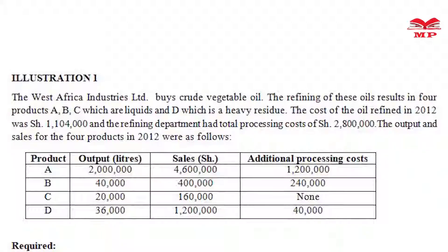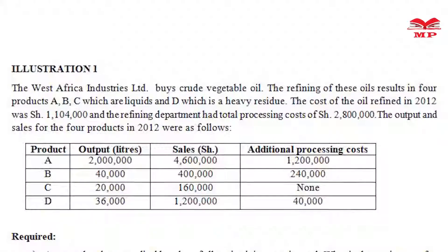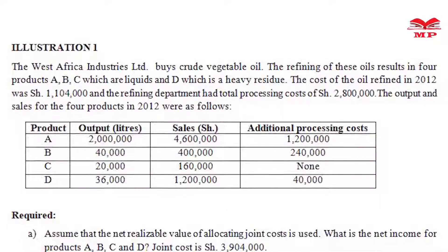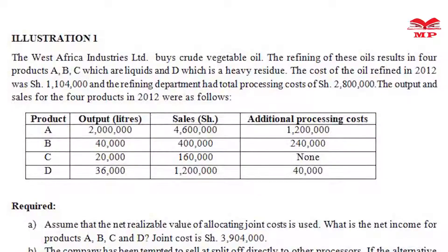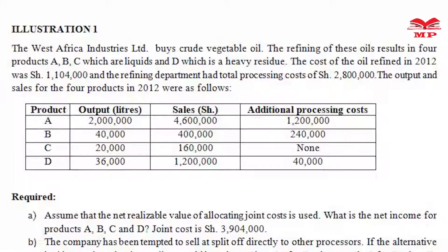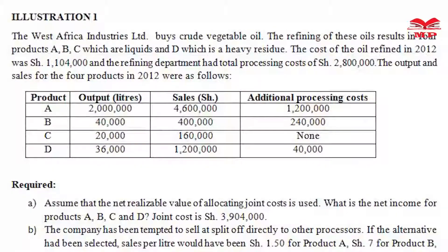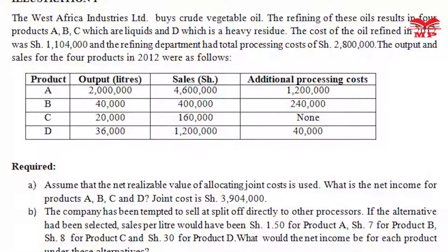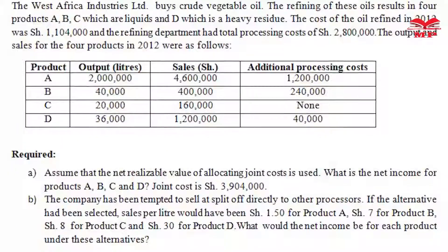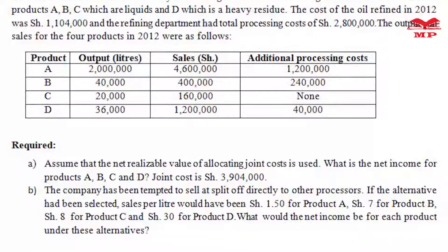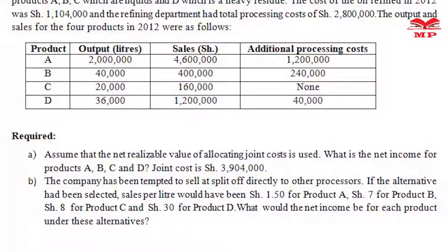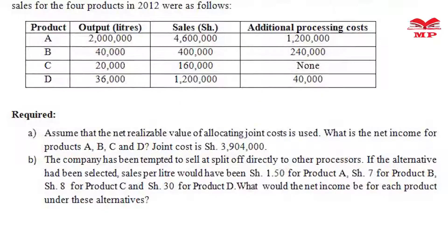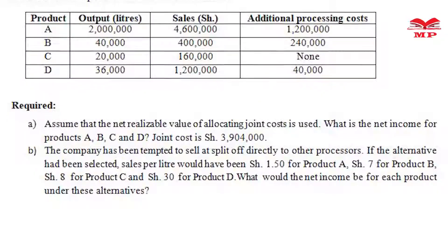The output and sales for the four products in 2012 were as follows. We have the product column, output in liters column, sales in shillings, and additional processing cost column. Product A: 2 million liters, 4.6 million shillings, 1.2 million shillings. Product B: 40,000 liters, 400,000 shillings, 240,000 shillings. Product C: 20,000 liters, 160,000 shillings, none. Product D: 6,000 liters, 1.2 million shillings, 40,000 shillings.